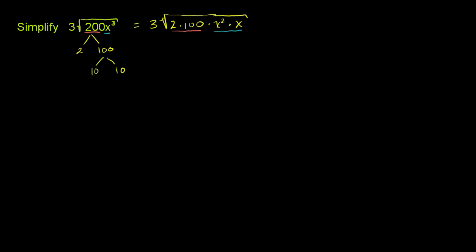So this is going to be equal to 3 times the square root of 2 times the square root of 100 times the square root of x squared times the square root of x. These terms right there in blue, that's these terms right there. The terms in orange, that's those terms right over there.